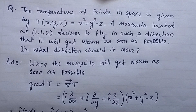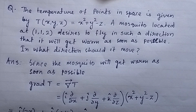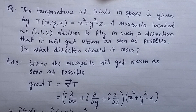The temperature of points in space is given by T equal to x squared plus y squared minus z. A mosquito located at the point (1, 1, 2) desires to fly in such a direction that it will get warm as soon as possible. In what direction should it move?